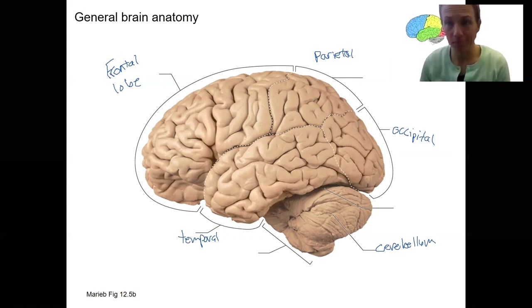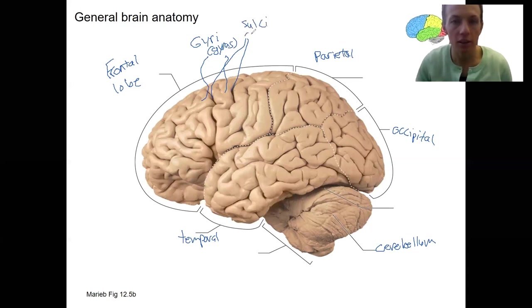Okay. What else do you notice about this brain? It's got a lot of stuff going on. It's got a lot of grooves and ridges. So these ridges here are called gyri. That's plural. The singular is gyrus. And in between each ridge, there are these grooves. These are called sulci.